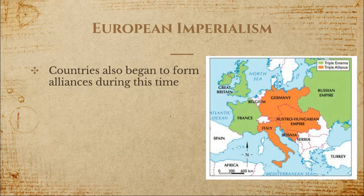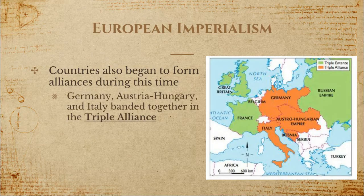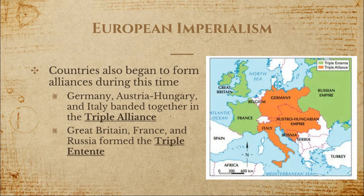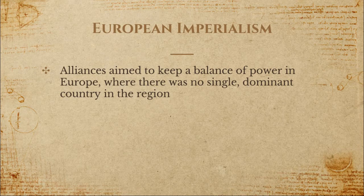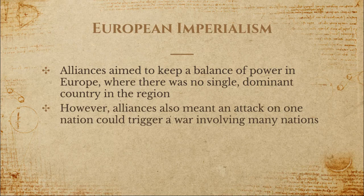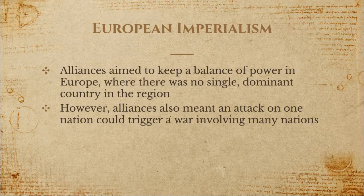In addition to gaining new lands, countries also began forming alliances. Germany, Austria-Hungary, and Italy banded together in the Triple Alliance, while Great Britain, France, and Russia joined to form the Triple Entente — both alliances are visible on the map. Alliances were created to keep a balance of power in Europe so that no single country would dominate the region. By banding together, countries could protect themselves from one nation suddenly taking over a large portion of the world. However, these alliances also meant that an attack on one nation could trigger a war involving many nations, because alliance members agreed to fight for and defend each other — and we will see in the next video that this is exactly what would happen.